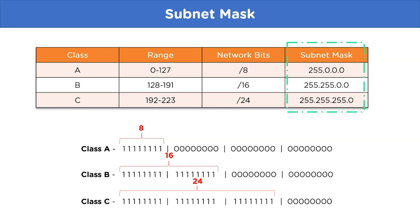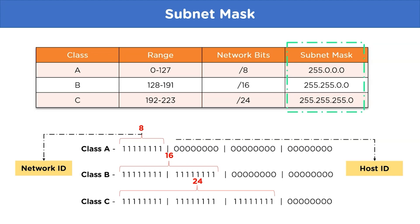To better understand this, let's look at each class individually. The network ID part is represented by binary digit 1, whereas the host ID represents binary digit 0. For Class A we have 8 bits as network ID and the remaining bits as host ID, meaning the number of available host addresses is the largest in Class A.